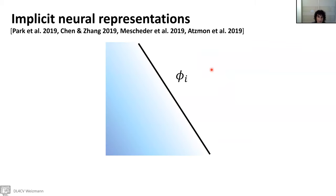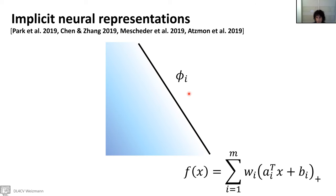Recently, many works have shown that it is possible to represent implicit functions by neural nets. In the simplest example with just one layer and a ReLU activation, each basis function phi_i is an affine function on one side and zero on the other, and f is a combination of these affine functions after applying ReLU, times w_i. Note that here we also optimize for a_i, b_i, and w_i — the functions are not given as before. This is a non-linear, implicit neural representation. We can generalize by taking more layers, where each neuron in the last layer represents a basis function multiplied by w_i, and in this way we can represent very complicated shapes.